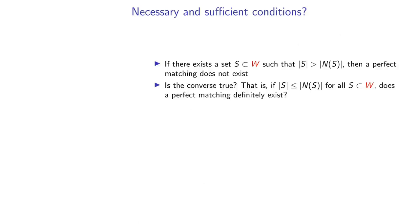We've established a necessary condition for the existence of a perfect matching. If you can find a constricted set — where the cardinality of the set is greater than that of its neighbors — then you can conclude there isn't a perfect matching. It's natural to ask about the converse: can we turn this into a sufficient condition? Suppose that no constricted set exists. Does that mean a perfect matching exists? It feels like the answer should be no, but actually it is somewhat surprisingly true.